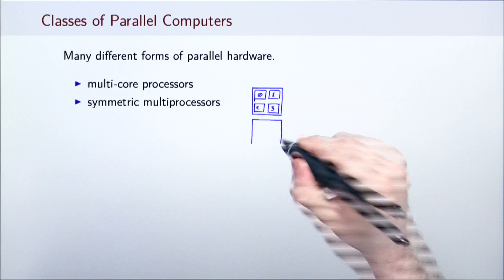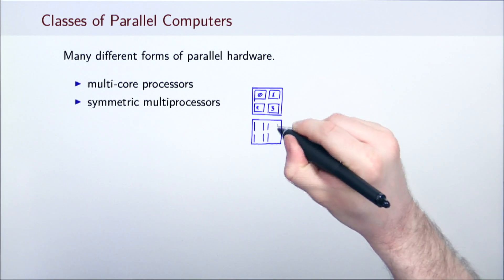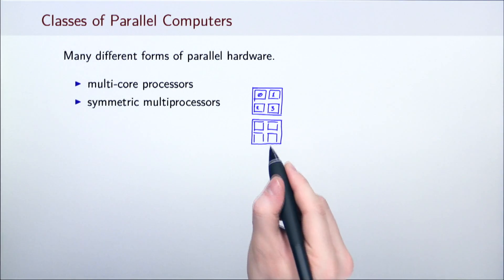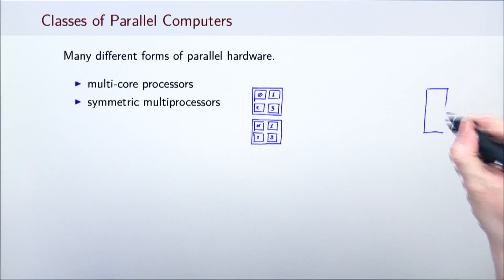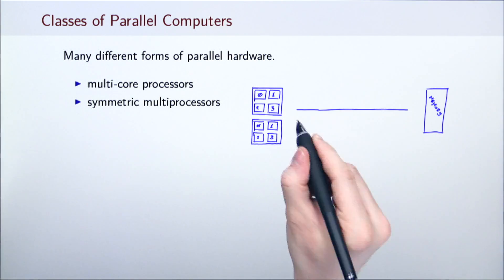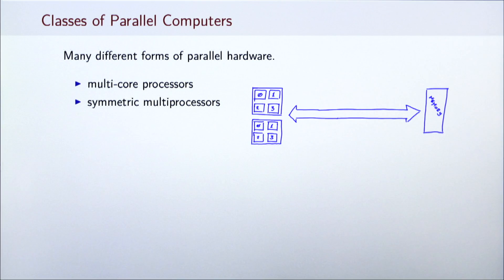A symmetric multiprocessor or SMP is a computer system with multiple identical processors that share memory and connect to it via bus. Here, multiple execution units are not on the same chip. An SMP itself can contain multi-core processors, as is the case in this illustration.